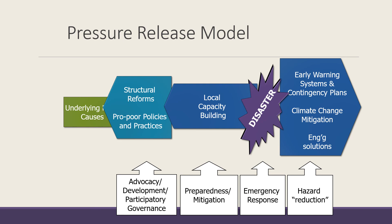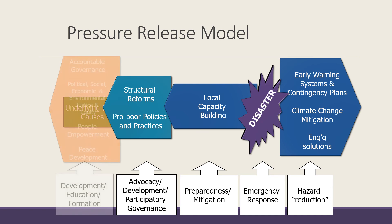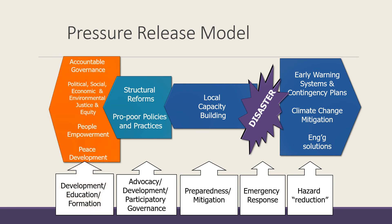To address the underlying root causes, we have to look for accountable governance, political, social, economic, and environmental justice and equity, people empowerment, and peace development. Here, we would require people-centered development, education, and formation. This is the pressure release model.